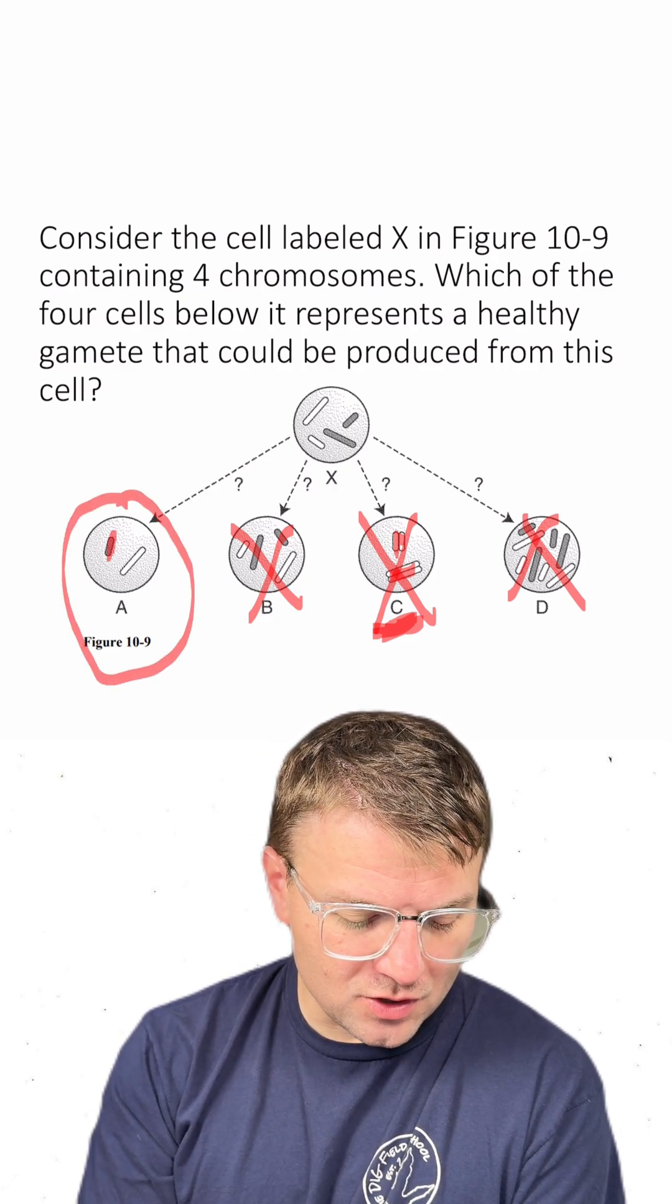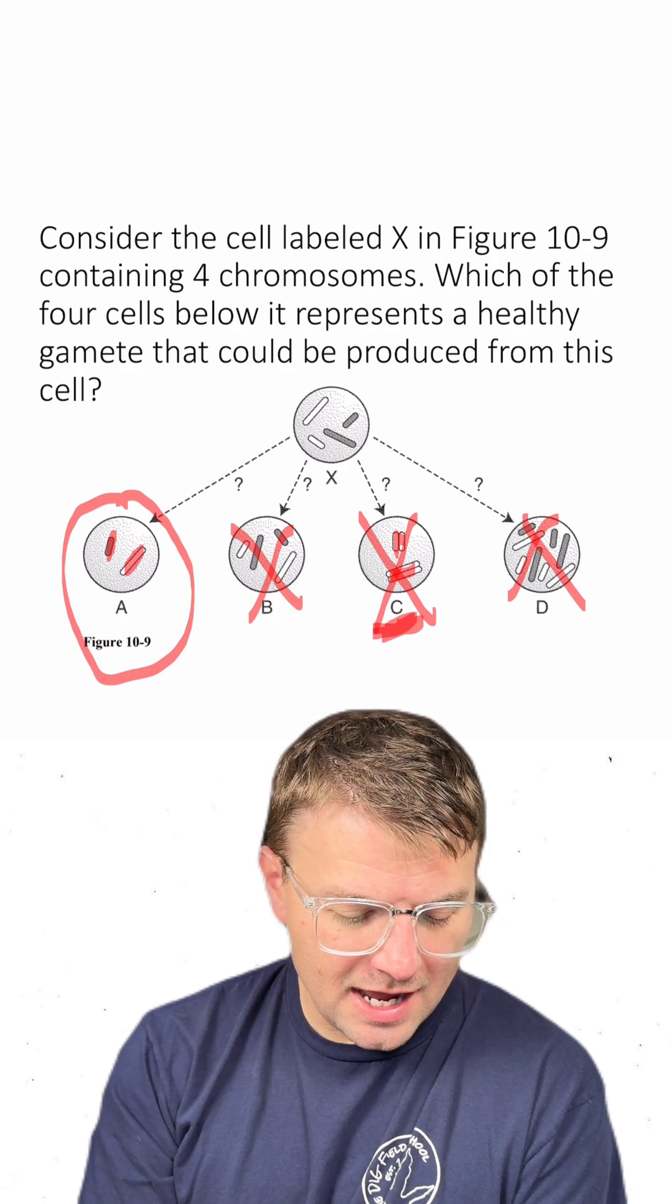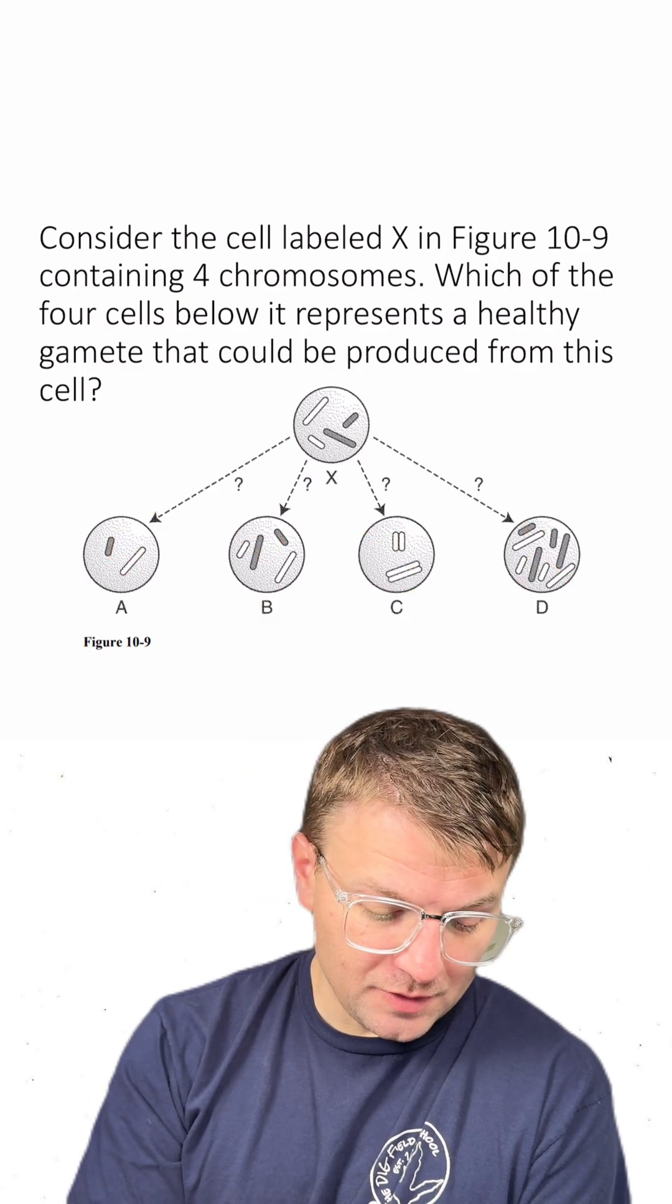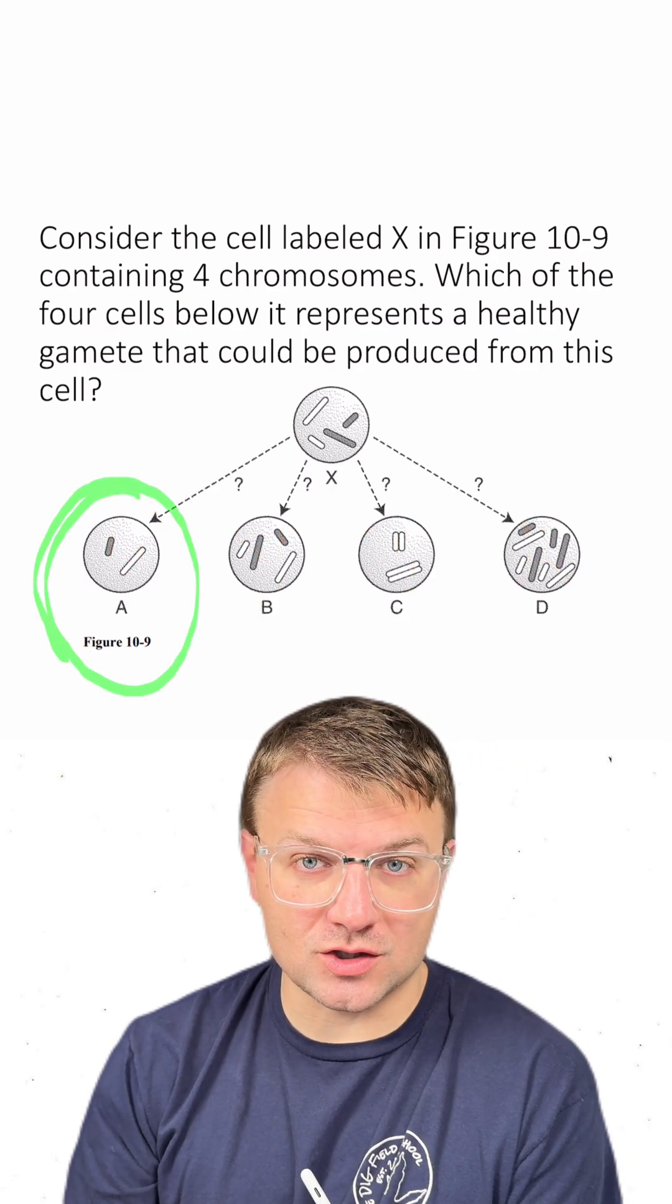If you look here in A, each one of these chromosomes only has one chromatid and we have one chromosome per homologous pair, which means A is the right answer for this question.